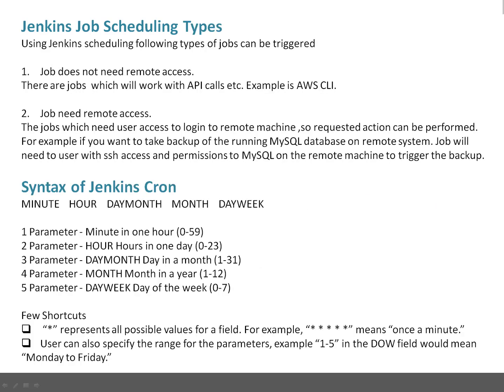Next, we need to understand Jenkins job scheduling types. Using Jenkins scheduling, two types of jobs can be triggered. The first type does not need remote access — for example, jobs that call AWS CLI or any API. You don't need to log into a remote machine; you can kick off the job by calling the AWS CLI function directly. These jobs don't need remote access.